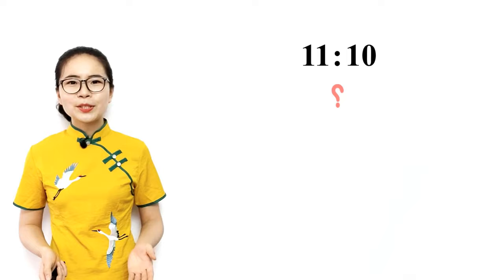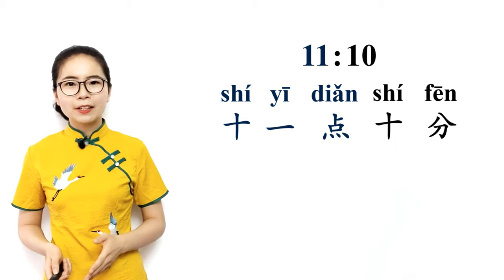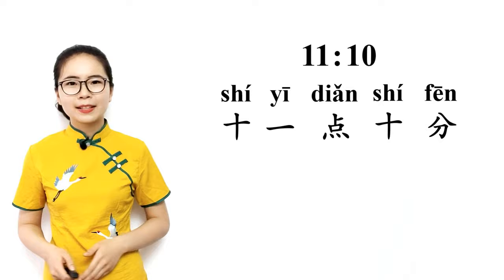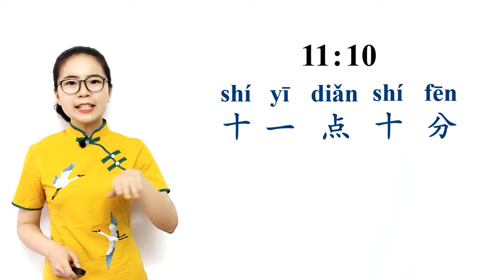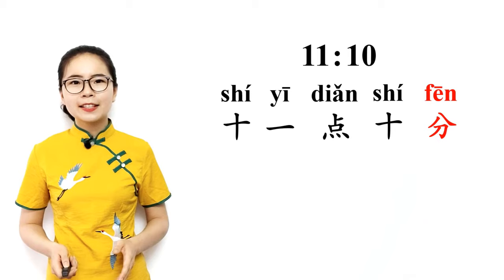How do you say 11:10? Correct, it's 十一点十分 — it's the hour part 十一点, eleven o'clock, followed by the minute part 十分, ten minutes. 十一点十分, eleven ten. Since the minute part here is 10 minutes, 分 cannot be omitted.